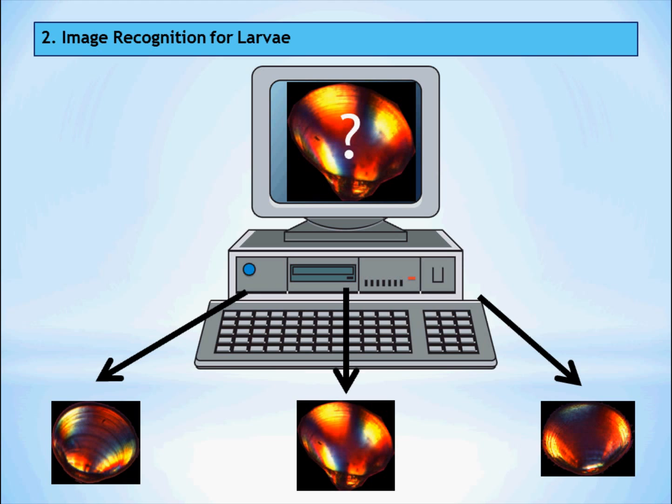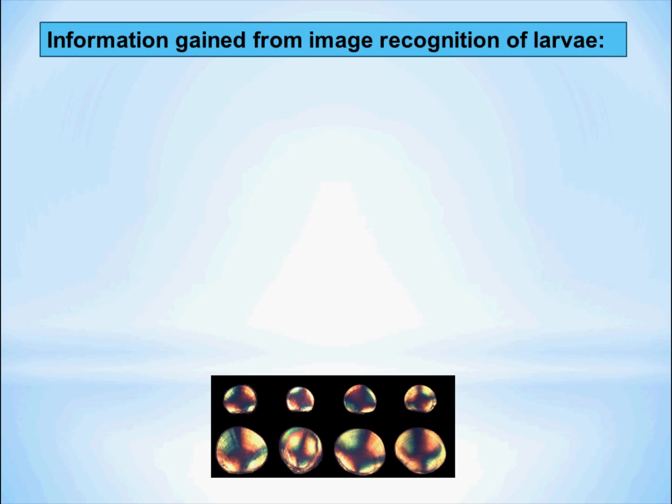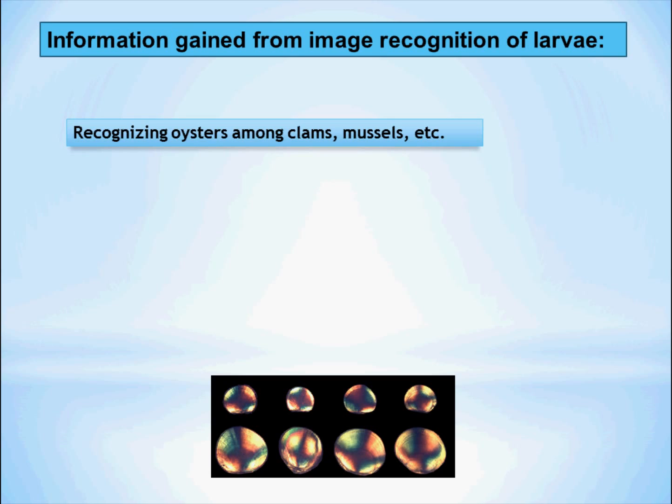It is much like the software the FBI uses to recognize human faces on their computer systems. With shell beat, we can recognize oysters among clams, mussels, and other things.